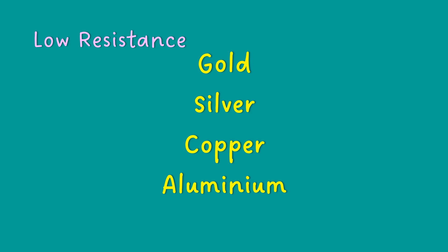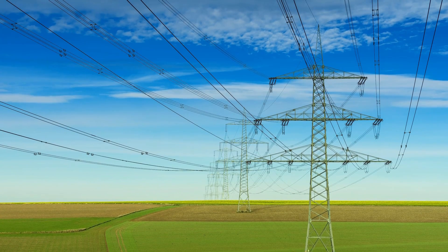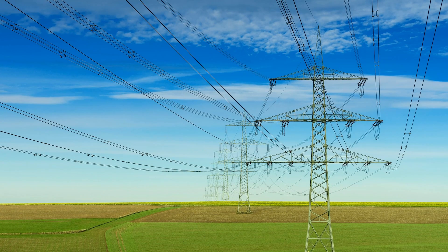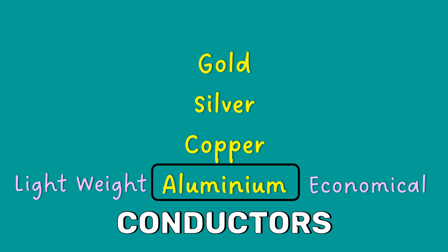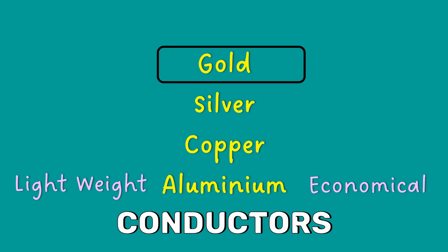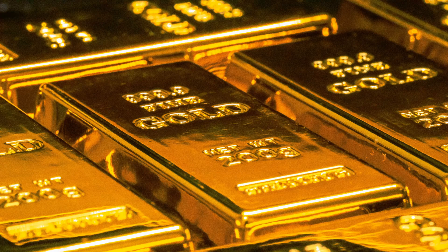These materials are called conductors. All our power transmission lines are made up of this conductor material. In most cases, the transmission line is made up of aluminium because it is lightweight and economical. Imagine having gold transmission lines — we may need a special police force just to take care of them. Also, pure gold is very soft, so gold is not actually a good candidate for transmission line material.